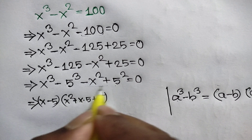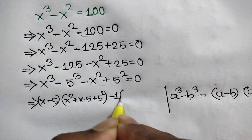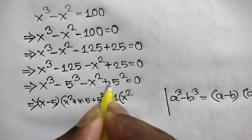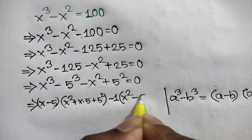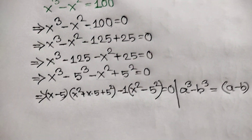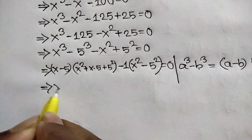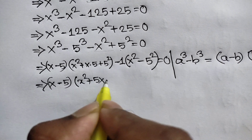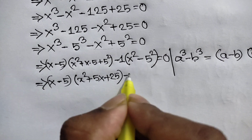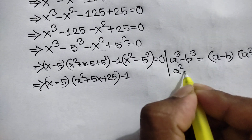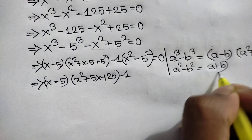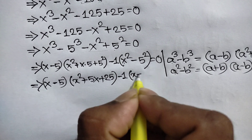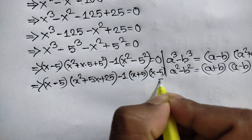Taking negative 1 common from the last two terms, the negatives cancel and we are left with negative times positive giving negative 5 square equals 0. So we have x minus 5 times x square plus 5x plus 25, and we apply the difference of squares rule a square minus b square equals a plus b times a minus b, where a equals x and b equals 5, giving x plus 5 times x minus 5 is equal to 0.